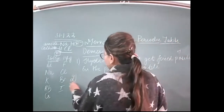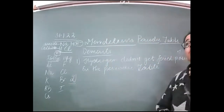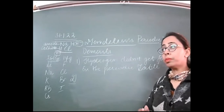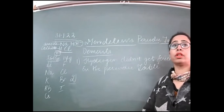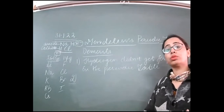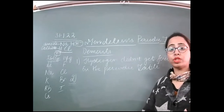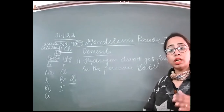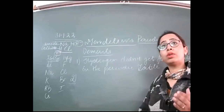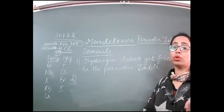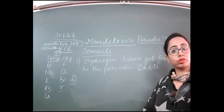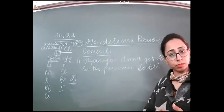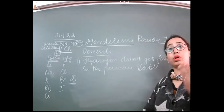The second demerit is about isotopes. Isotopes are atoms of the same element which have different atomic masses but the same atomic number. You have studied isotopes in ninth standard — for example, hydrogen has isotopes: protium (mass 1), deuterium (mass 2), and tritium (mass 3). So the atomic number is the same but the atomic masses vary.